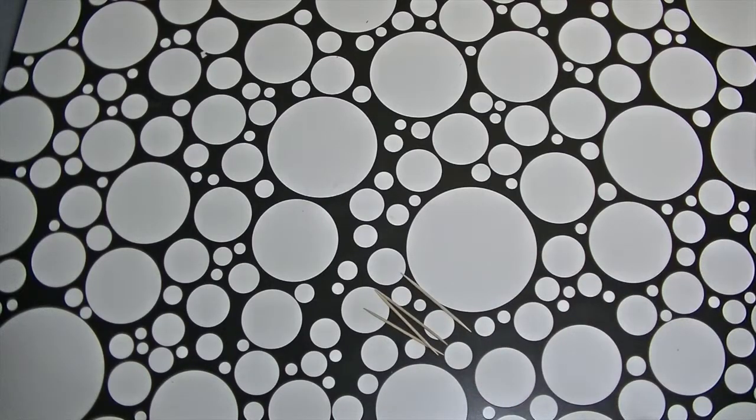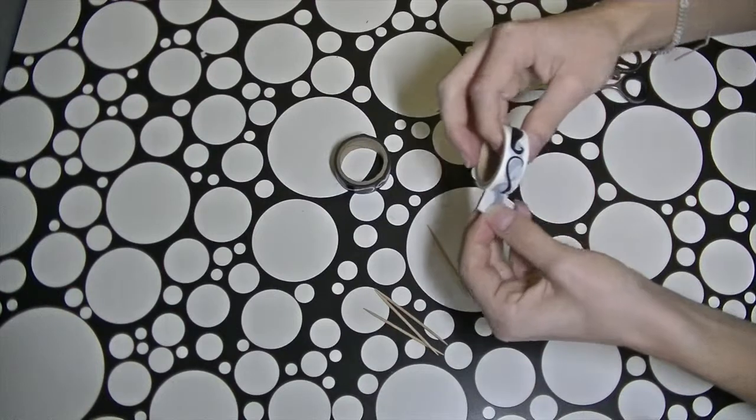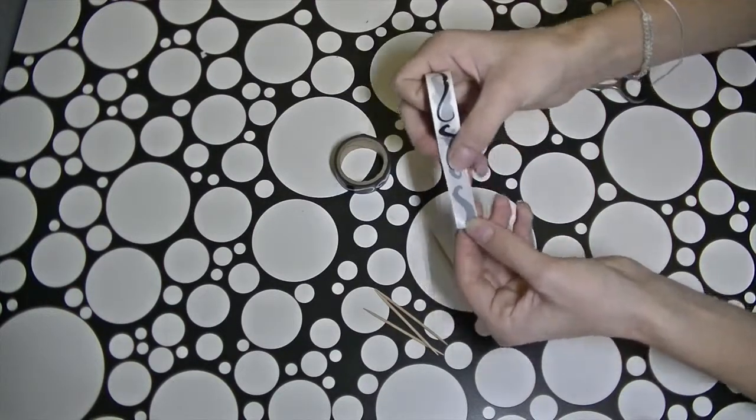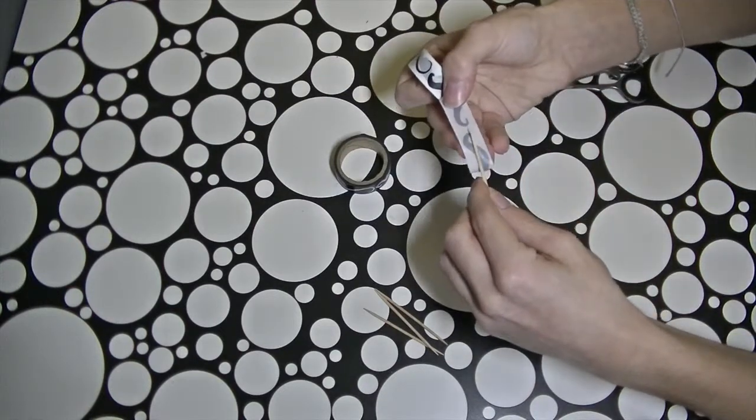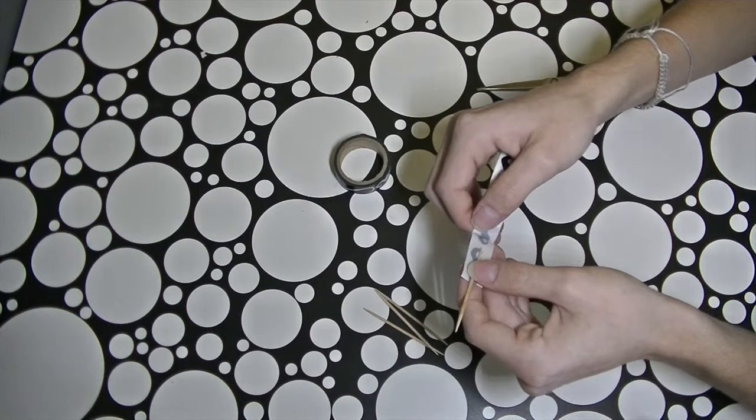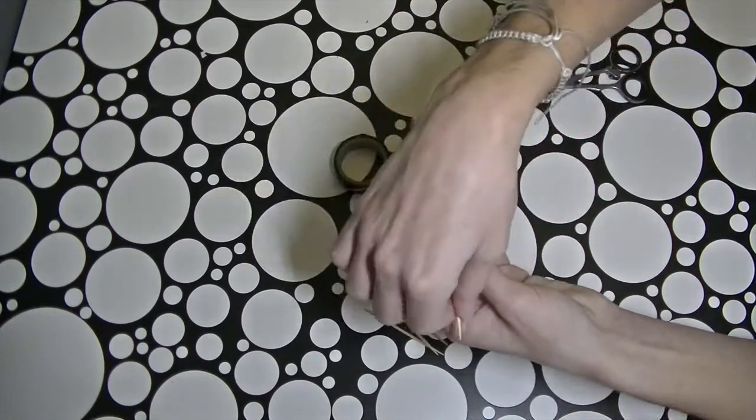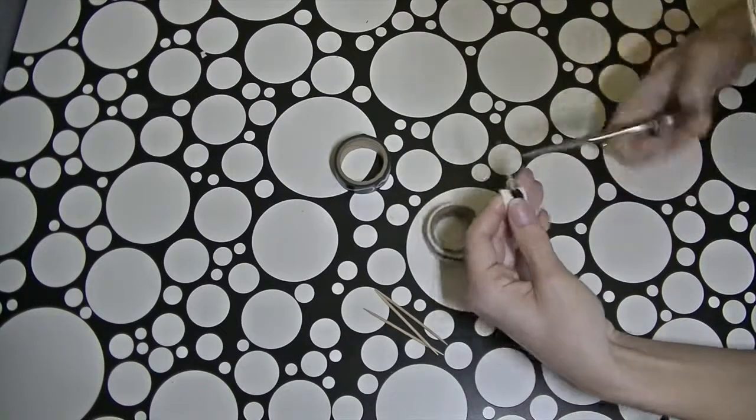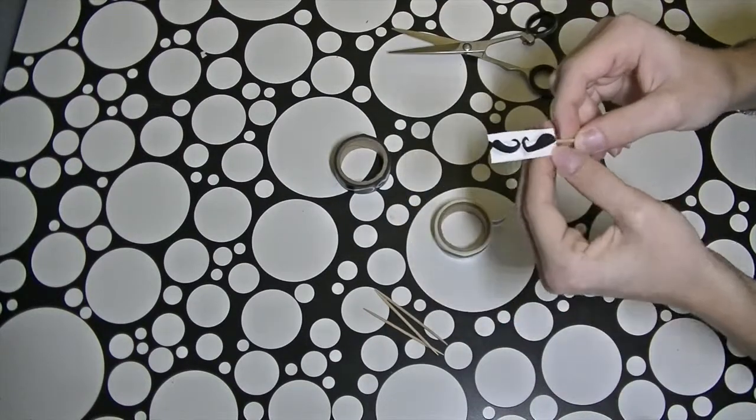You could also use washi tape to make some cute cupcake toppers – and you know I love cupcakes! For this you're just going to need skewers and washi tape. You just unroll a bit of the washi tape, stick down the skewer onto the tape, and then stick down the other side to make like a sandwich. And there you have it!